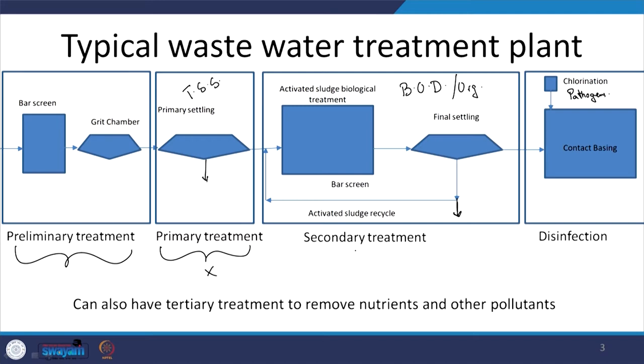So we have primary treatment, secondary treatment, and then disinfection. Sometimes you will have tertiary treatment if you also want to remove nitrogen and phosphorus. In India, mostly we only have up to secondary treatment, and even then treatment plants are often poorly run — largely because people think that microbes are like machines. Microbes are living organisms; you take care of them, the system thrives, and you have a well-functioning sewage treatment plant.